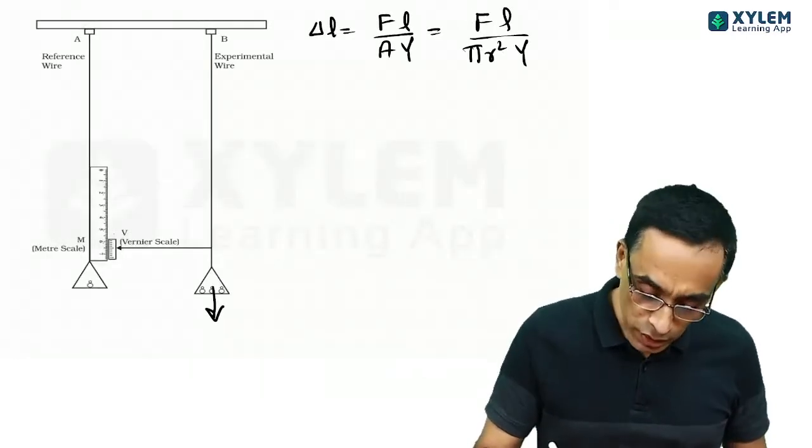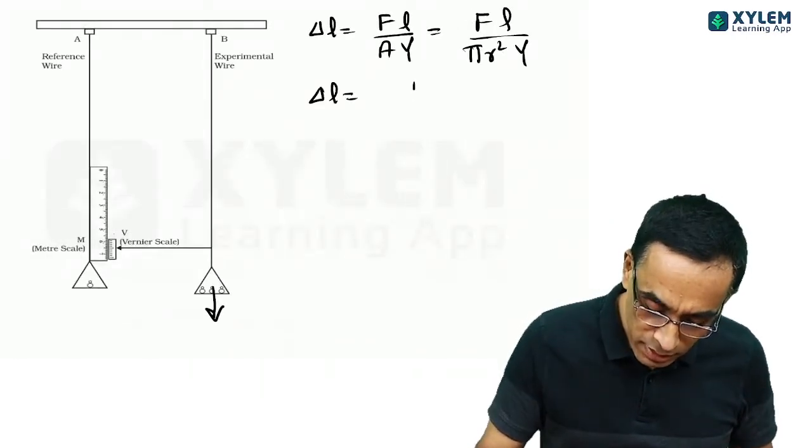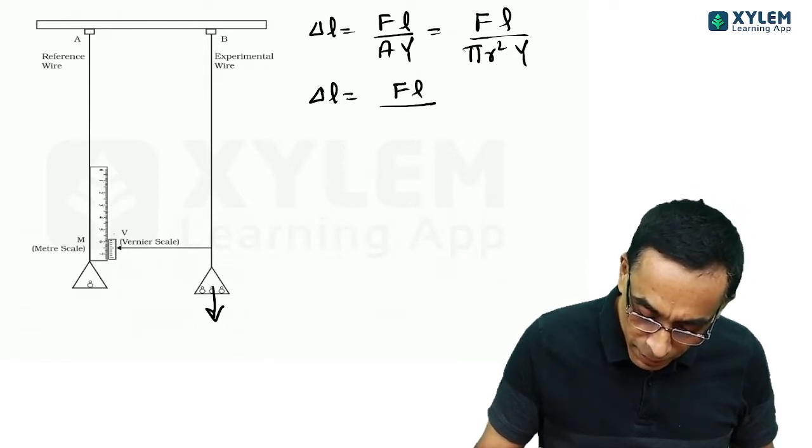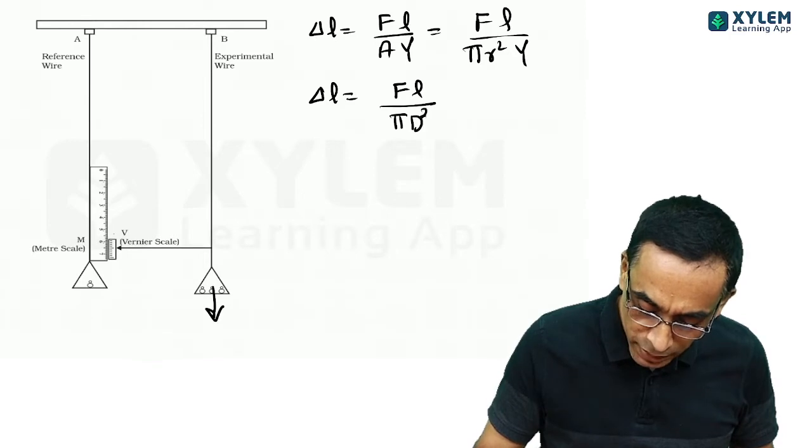This is done in two parts. One, you have to find out the elongation in the wire. Then, you have to find out the reading in the vernier scale. So, let us find out the elongation in the wire.